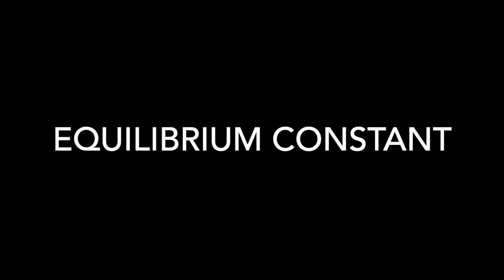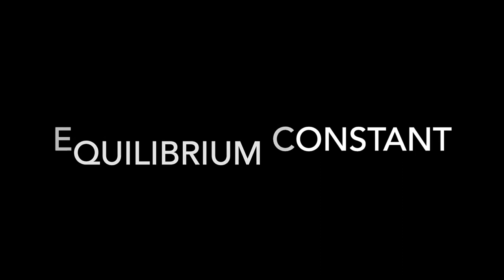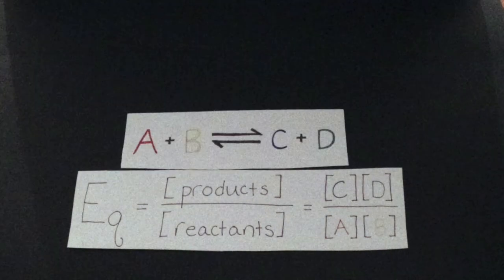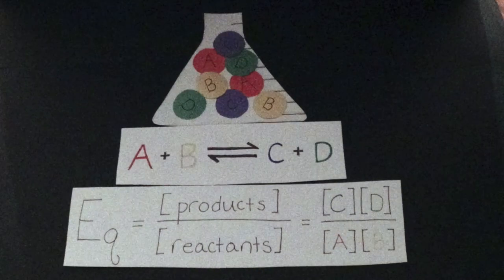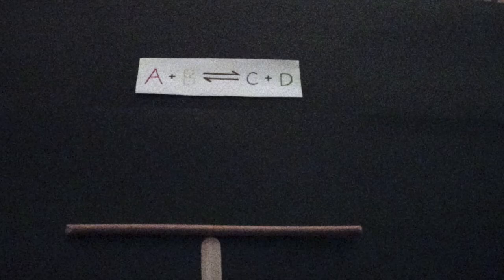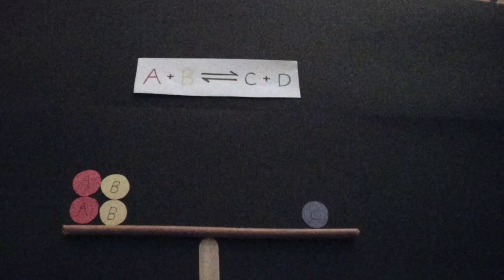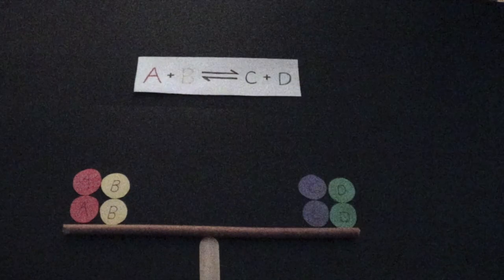Le Chatelier's principle is utilized in order to keep the equilibrium constant the same. A and B are our reactants while C and D are our products.